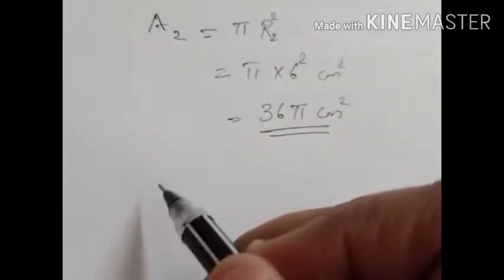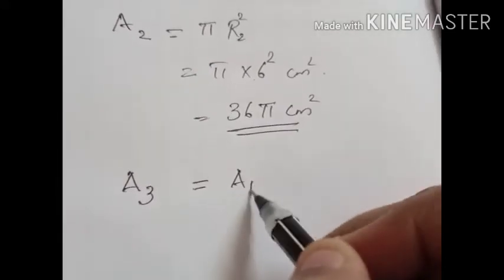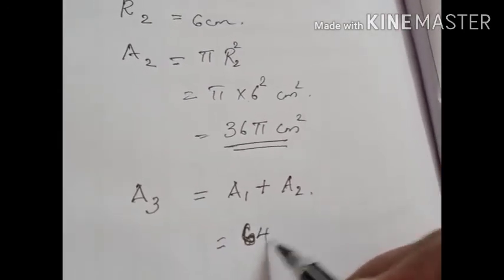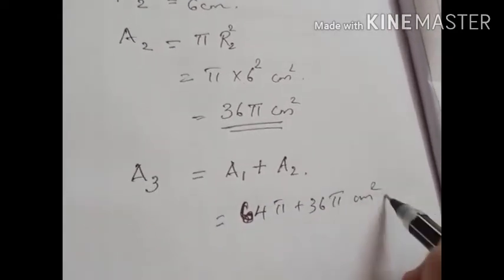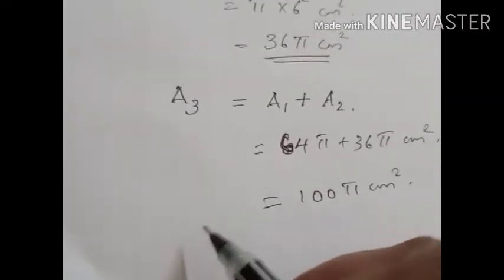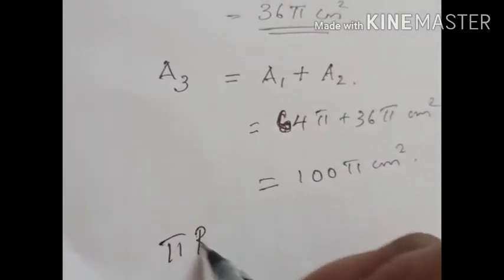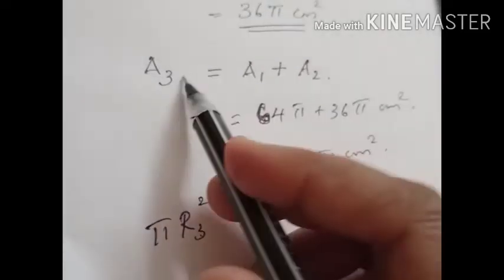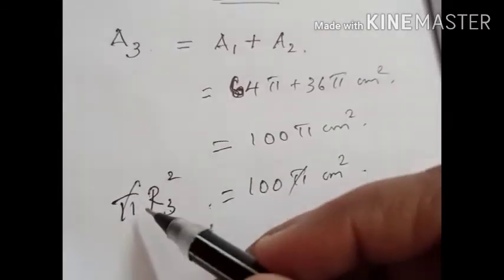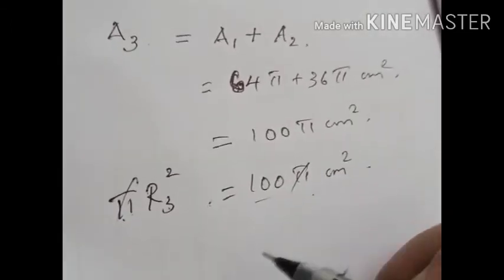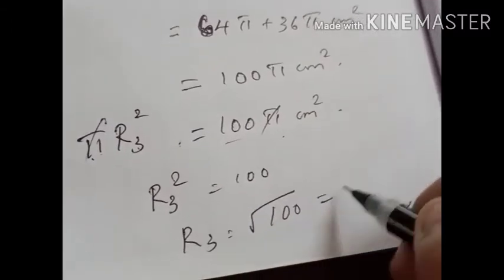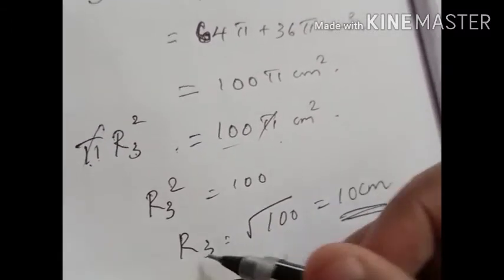According to the question, the area of the third circle equals area of the first plus area of the second, which is 64 Pi plus 36 Pi, giving 100 Pi cm square. Substituting the equation for A3: Pi R3 square equals 100 Pi cm square. Pi cancels on both sides, so R3 square equals 100. Therefore R3 equals root of 100, which is 10 cm. The radius of the third circle is 10 cm.